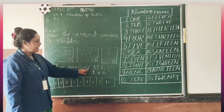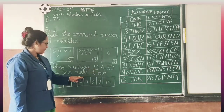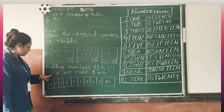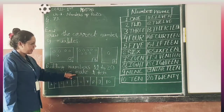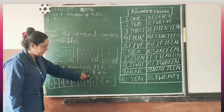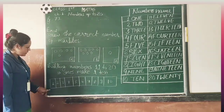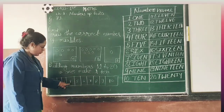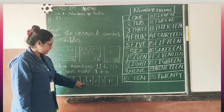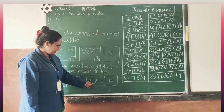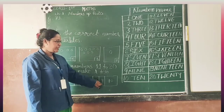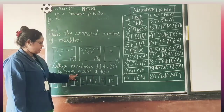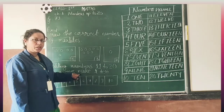Building numbers 11 to 20. Question first: 10 was make 110. Count it: 1, 2, 3, 4, 5, 6, 7, 8, 9, 10. Make a 10. 110. Okay.